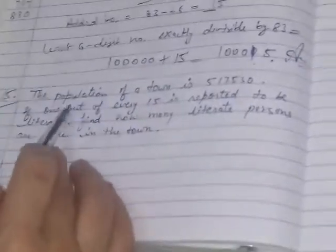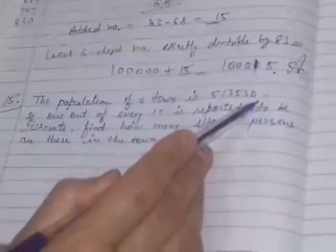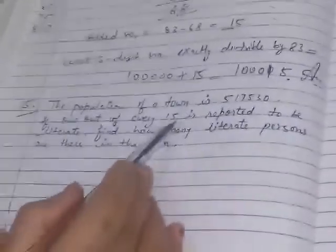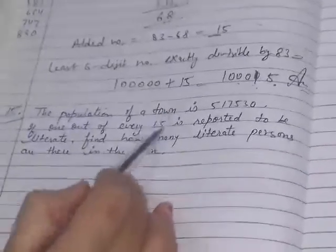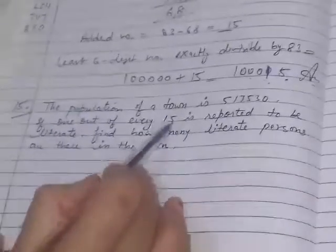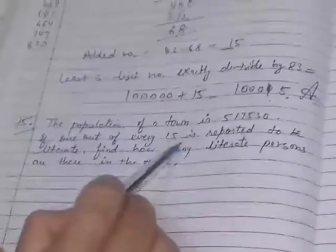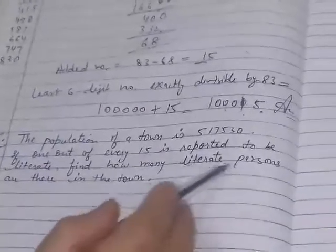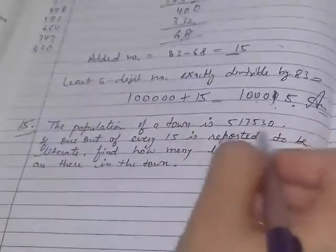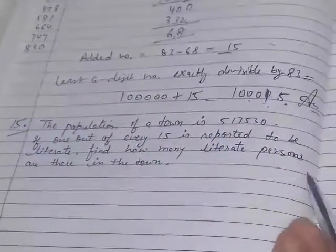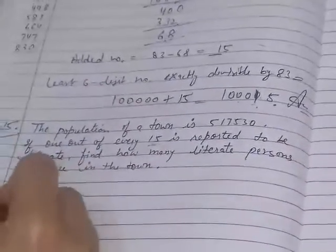The population of a town is 517530. If 1 out of every 15 is reported to be literate - every 15 person, from every 15, 1 person is literate. Find how many literate persons are there in the town. So write down the statement.